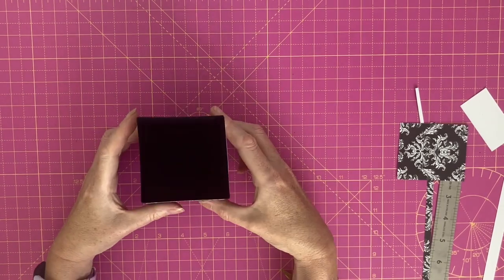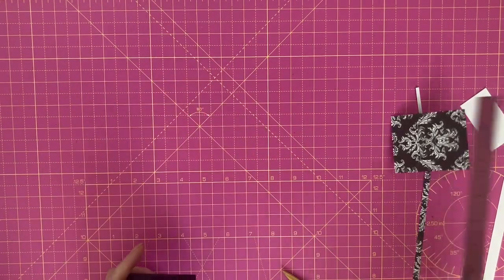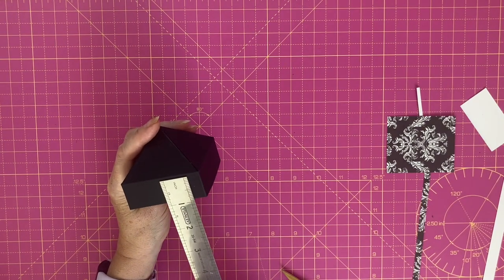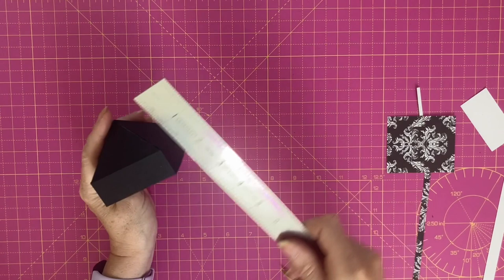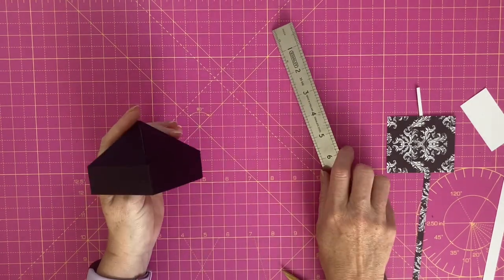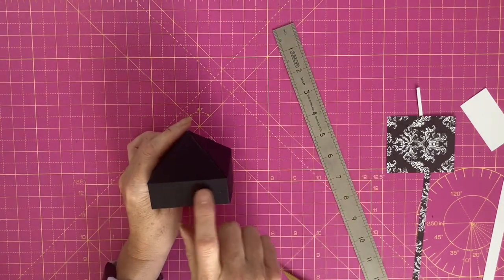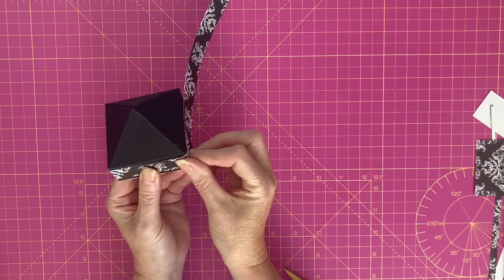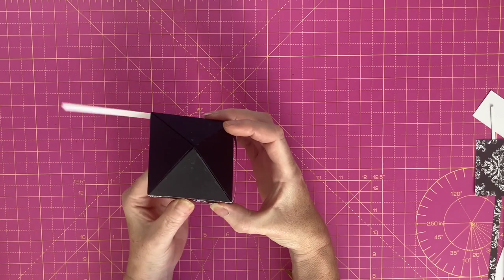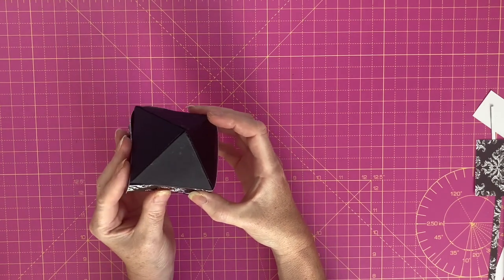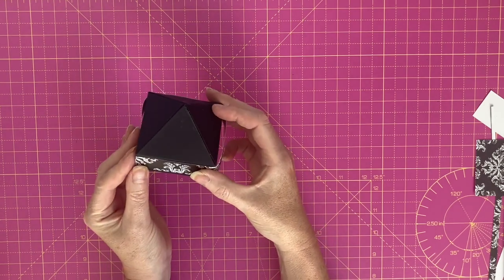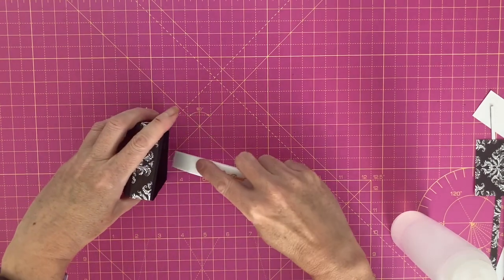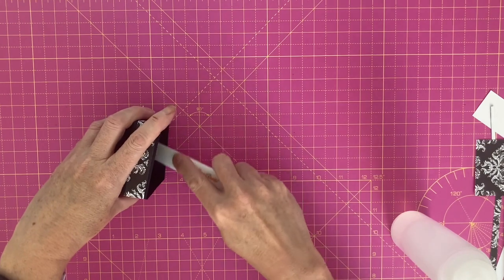So I'm going to set that aside to dry completely. For the lid we'll use one strip of designer paper which is eleven and a half inches by three quarters of an inch, and that will allow us a half inch tab underneath. So I have my strip and I'm just going to wrap that around the lid like so. I'm just going to use my bone folder just to go in and just press from the back.